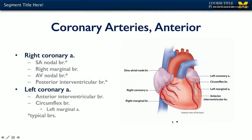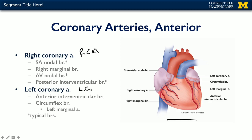Here we can see an illustration of the heart from the anterior view, as well as the great vessels and the coronary arteries — both the right coronary artery (RCA) and the left coronary artery (LCA). There are typical branches or patterns of distribution from each of these coronary arteries.